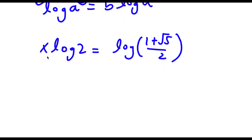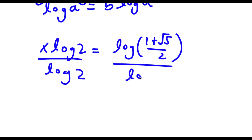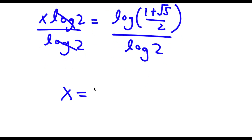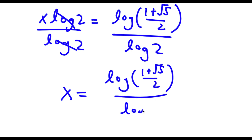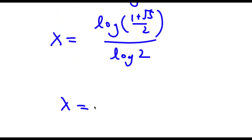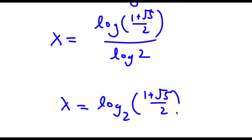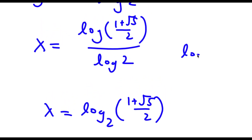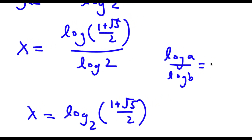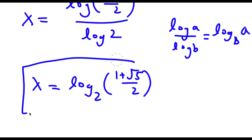Now if I divide both sides by log 2, these cancel out and I'm left with x equals log of 1 plus the square root of 5, over log 2. Now this is the same thing as log base 2 of 1 plus the square root of 5 over 2, because log a over log b equals log base b of a. So this is my solution.